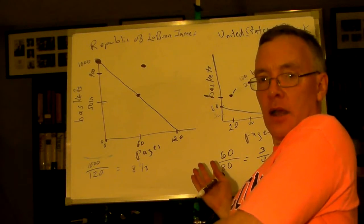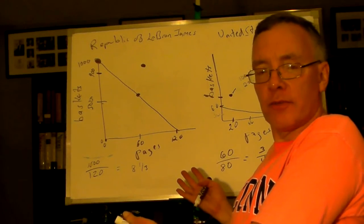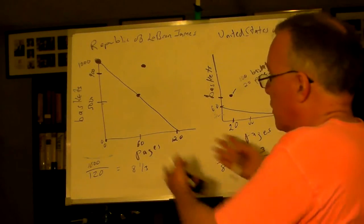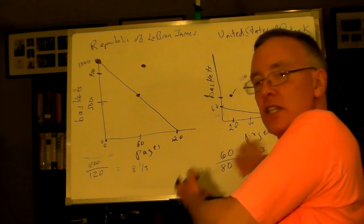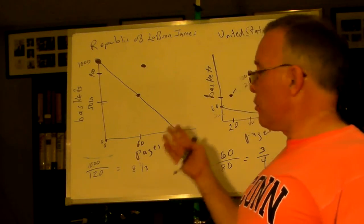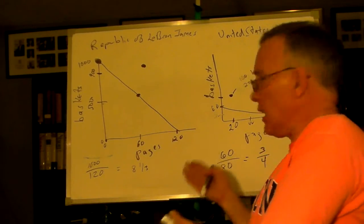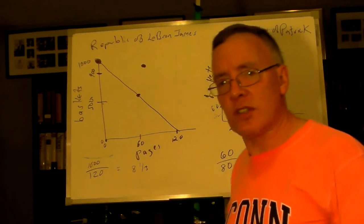So, by trading, both countries, both people are better off. And what's amazing is that LeBron James is better off trading with somebody who isn't as good as him at anything. But then, if you think about it, well, yeah, LeBron James is a faster typist. Why would he get a slower typist to do his typing for him?